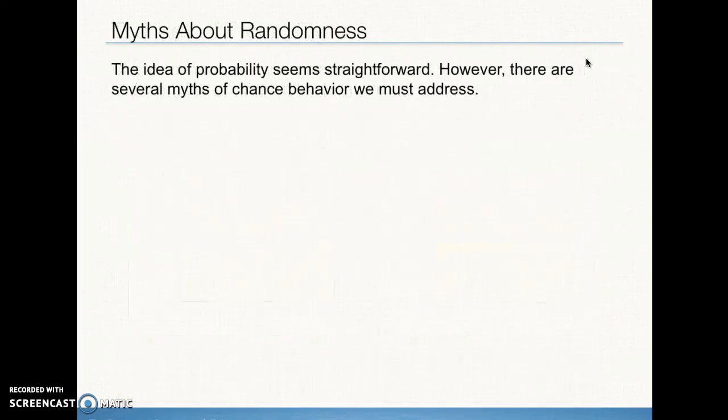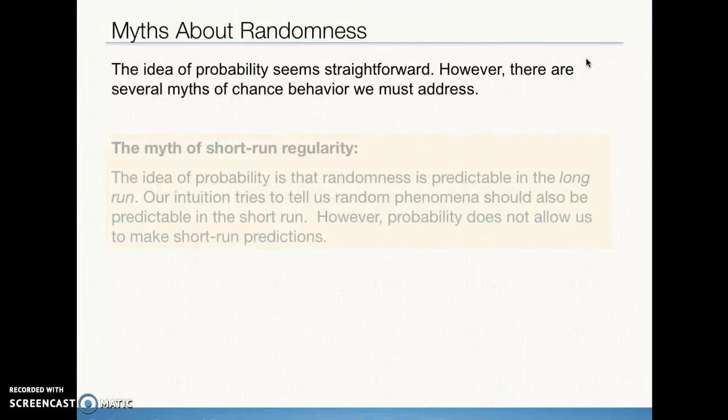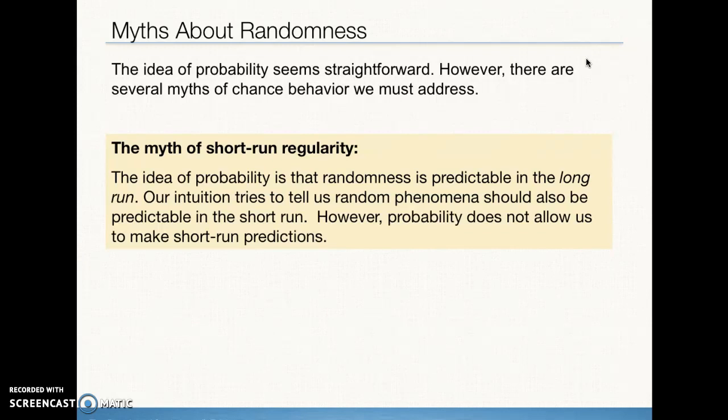We often as humans think that we can come up with random lists, random selection, but this is really a myth. Even though we understand probability, we're not really good at being random. One of the myths is the idea of short-run predictability or regularity. We do understand long-run. We can all agree that in the long run, if I were to flip a coin 10,000 times, we would be able to see approximately very close to 50% heads and 50% tails.